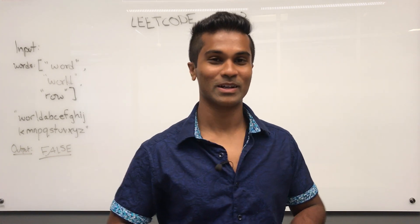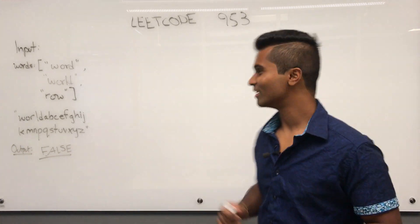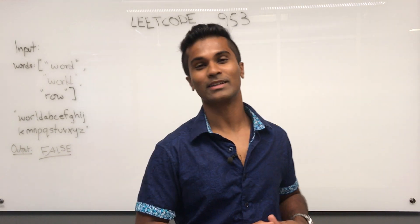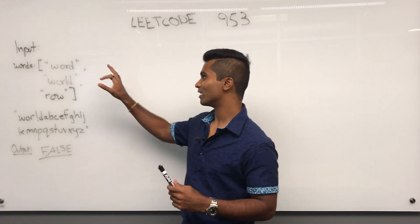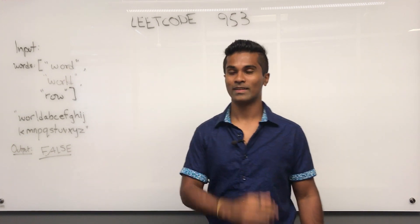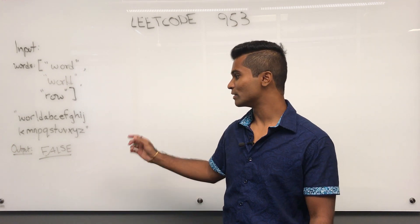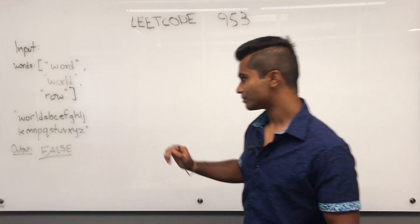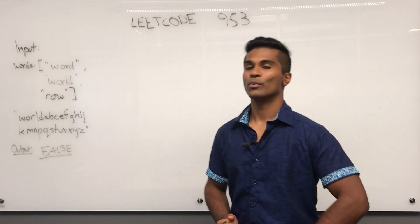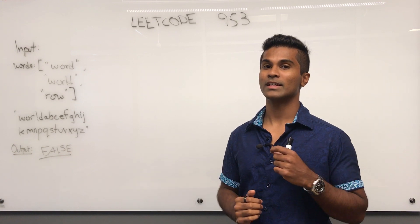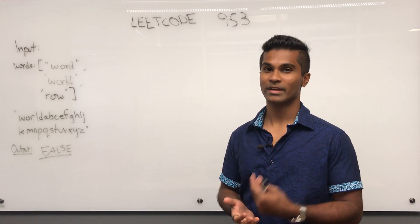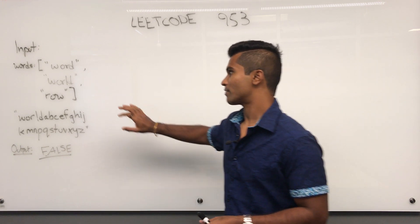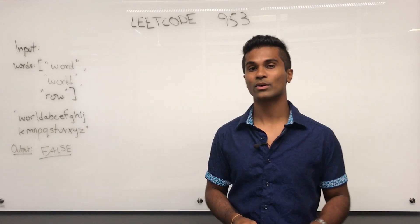What's up everyone, today we're going to go over LeetCode 953: Verify Alien Dictionary. The input is going to be a list of words and a string, and the output needs to be true or false. What they're asking is: given the string which gives us the alien language's letter orderings, are the words in lexicographical order?